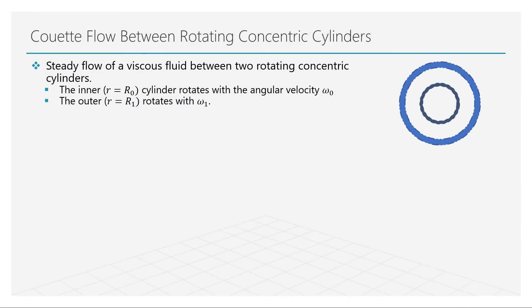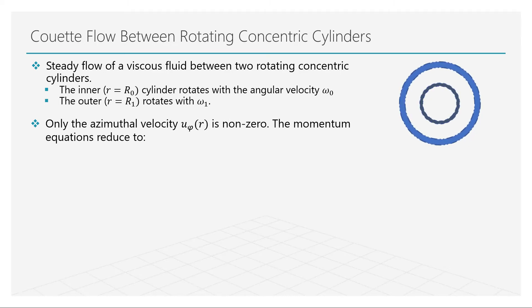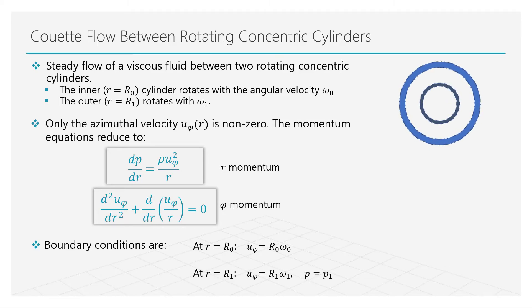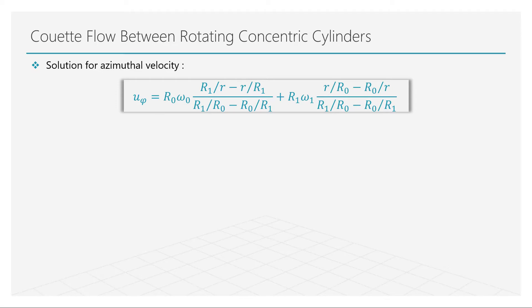We will now look at our final Couette flow problem, which has significant practical importance. Let us again consider the flow between concentric cylinders. However, instead of axial motion, we will impose a rotational velocity to the cylinders — the inner and outer cylinders are rotating relative to each other. We can assume that there is fluid motion only in the azimuthal direction, i.e., the direction of rotation. With these assumptions, the continuity equation is satisfied exactly and the momentum equations reduce to the following form. After integrating the azimuthal momentum equation and introducing the boundary conditions, we can obtain the equation for the azimuthal velocity distribution of the fluid.